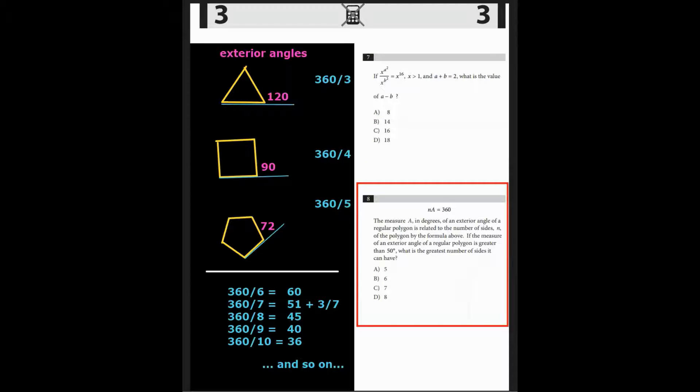Question 8. Na equals 360. The measure a in degrees of an exterior angle of a regular polygon is related to the number of sides of the polygon by the given formula. The measure of an exterior angle of a regular polygon is greater than 50. What is the greatest number of sides it can have?